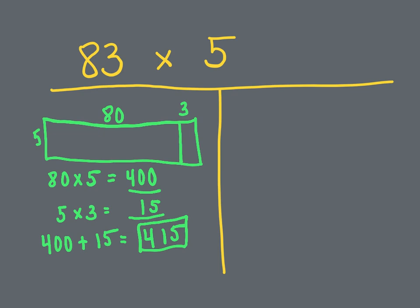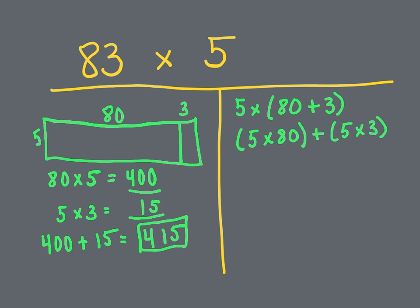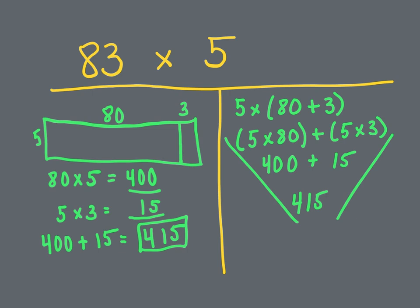Now we're going to show the distributive property: distribute the 5 to the 80 and the 3. Any time a number is outside a parenthesis with no sign, it always means multiplication. So we have 5 times (80 plus 3). Distributing: 5 times 80 plus 5 times 3. 5 times 8 is 40, add your 0, that's 400. Plus 5 times 3 is 15. Add up the two partial products to get 415.